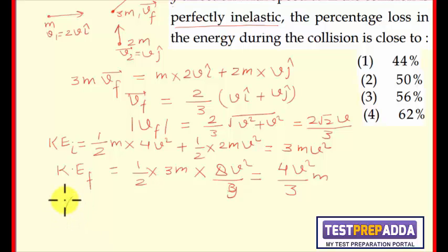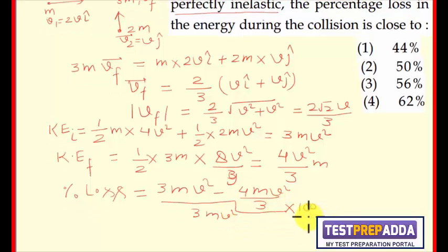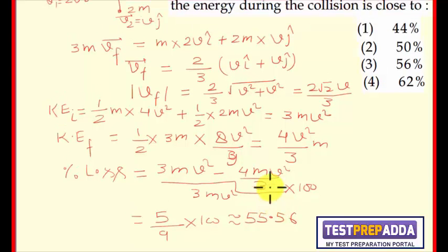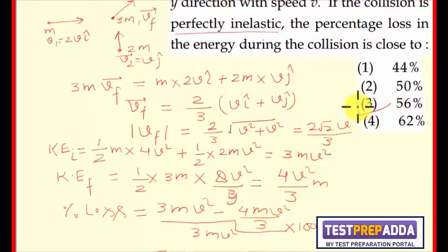The percentage loss is (3mv² minus 4mv² by 3) upon 3mv² times 100. This value comes as 5 upon 9 times 100, which equals approximately 55.56%, and this is close to 56%. So option 3 is the correct answer for this question.